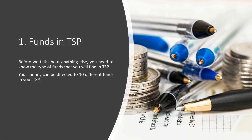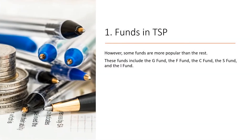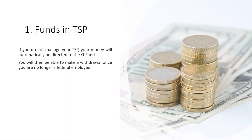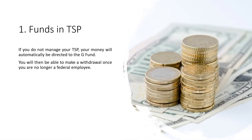1. Funds in TSP. Before we talk about anything else, you need to know the type of funds that you will find in TSP. Your money can be directed to 10 different funds in your TSP. However, some funds are more popular than the rest. These funds include the G Fund, the F Fund, the C Fund, the S Fund, and the I Fund. If you do not manage your TSP, your money will automatically be directed to the G Fund. You will then be able to make a withdrawal once you are no longer a federal employee.